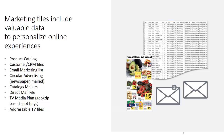Offline marketing files also include valuable data that can be used to personalize the online experience. An advertiser may have an offline product catalog, customer files, CRM files. They may be doing email marketing and have email marketing lists. Retailers are doing circular advertising — either inserted in newspapers or mailed. They may do TV advertising where they have media plans with geographic targeting information like geo-based spot buys. All of that can be used to personalize the online ad experience.